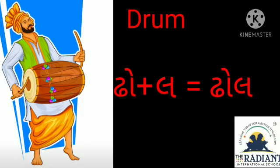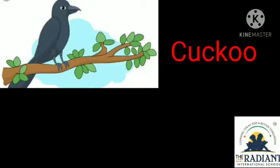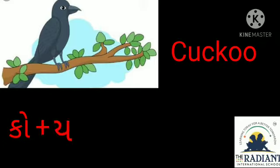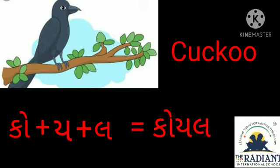This is a कुकू bird। इसको गुजराती में बोलते हैं कोयल। तो कोयल शब्द बनाने के लिए हम यूज़ करेंगे — क को ओ की मात्रा, प्लस य, प्लस ल। कोयल।